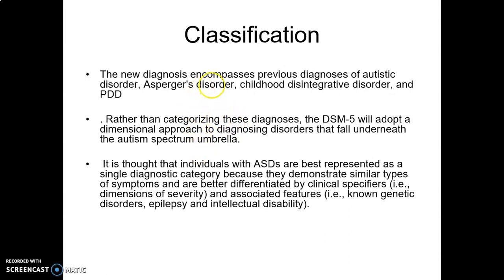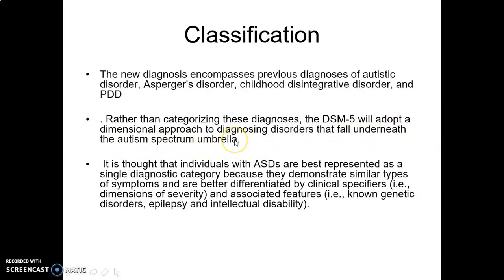The new DSM-5 diagnosis encompasses previous diagnoses of autistic disorder, Asperger's disorder, childhood disintegrative disorder, and PDD — pervasive developmental disorder. Rather than categorizing these separately, the DSM-5 adopts a dimensional approach to diagnosing disorders that fall underneath the autism spectrum umbrella. All these conditions are grouped under the common umbrella term 'autism spectrum.'